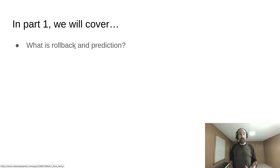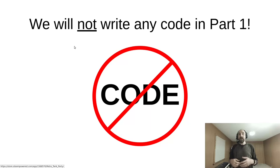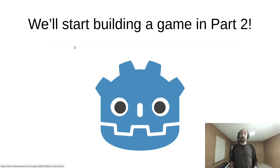In this part, we will cover what Rollback and Prediction is, how it works in detail—we will be stepping through an example match frame by frame, why you might want to use it, and what are some of the pros and cons.